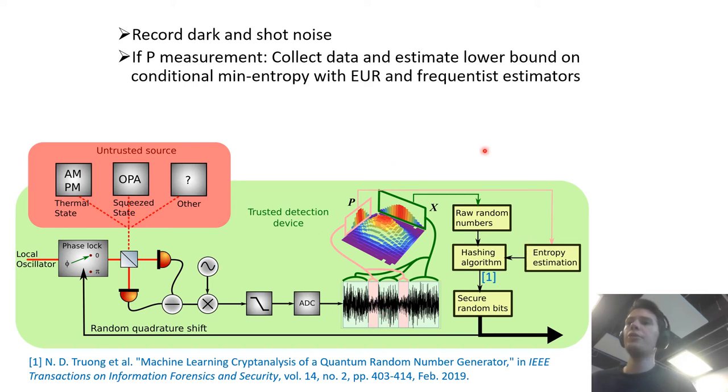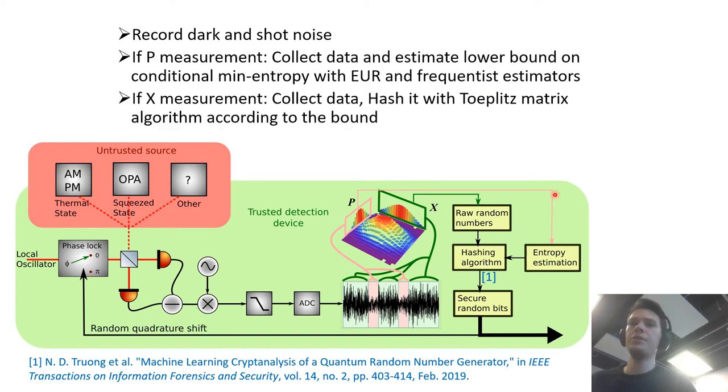And we'll use the frequentist estimator for this quantity. Now when we go to the actual quadrature that we're interested in the data quadrature X we can collect the data and then we'll hash it accordingly to the entropy bound we estimated before.